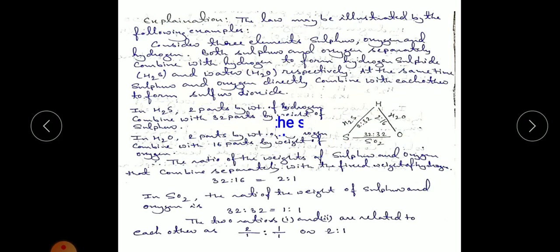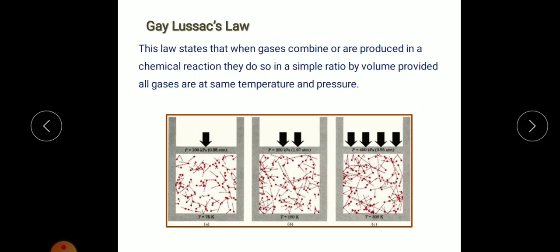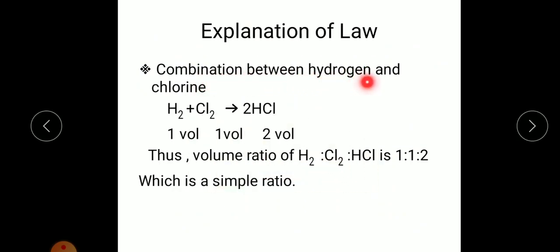The next law is Gay-Lussac's law, which you have already studied in Class 10 in the chapter on mole concept, and it appears again in Class 11. This law states that when gases combine or are produced in a chemical reaction, they do so in a simple ratio by volume, provided all gases are at the same temperature and pressure.